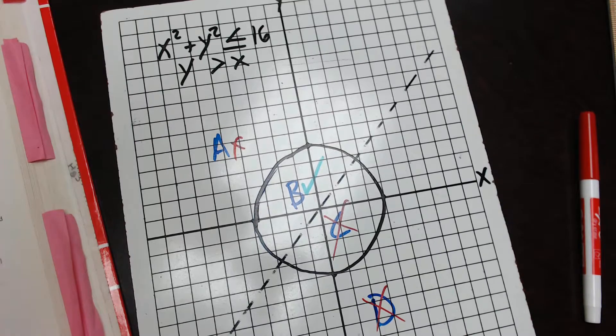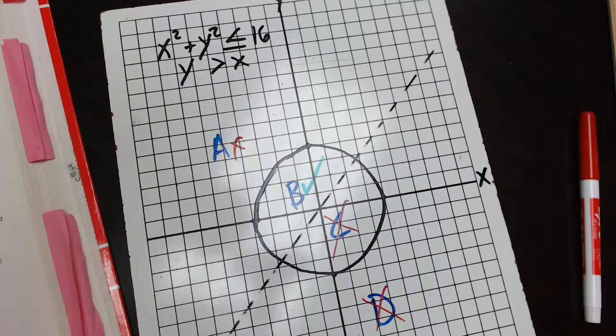Now if it were greater than the circle, then A would have been the correct answer because, again, greater than the circle is outside the circle.